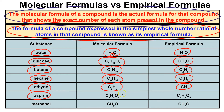For aspirin, the molecular formula is C9H8O4. If you look closely, you cannot factor out any number from each one of these subscripts — there is no lowest common denominator among the numbers 9, 8, and 4 — so the empirical formula is the same: C9H8O4.